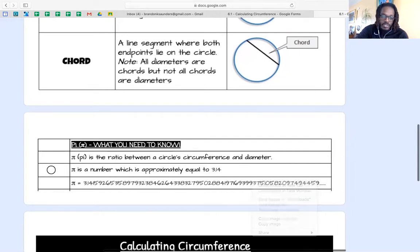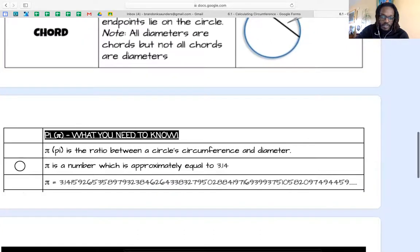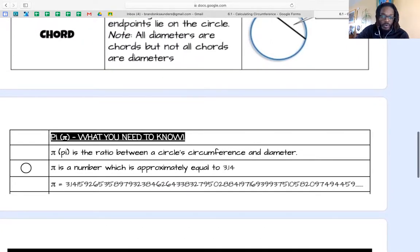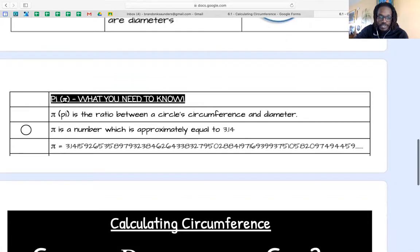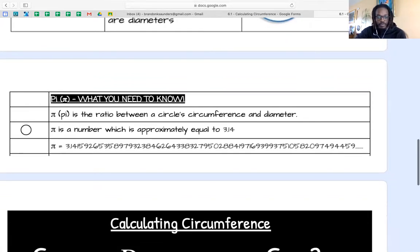So you're either going to use pi as 3.14, you're going to keep it as pi, or you're going to round it up to three. So it's either going to be pi, 3.14, or three.